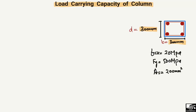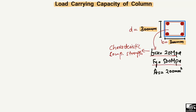The characteristic compressive strength of the concrete is given as 20 megapascal — this is the strength of the concrete used in this column. The yield strength of the steel bar, fy, is 500 megapascal.